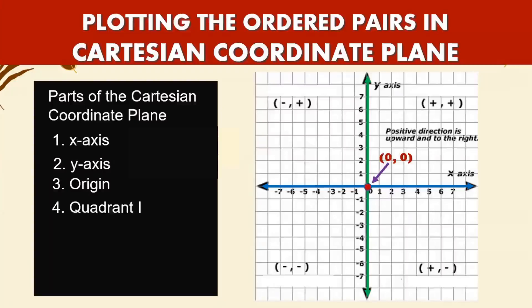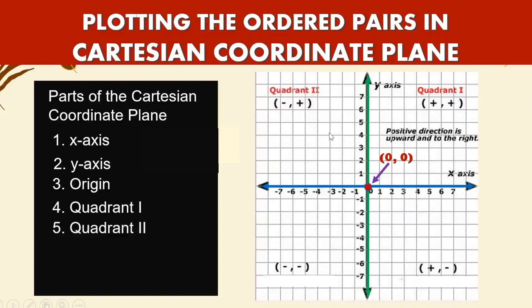Quadrant one is the part of your coordinate plane with coordinate signs positive and positive. Quadrant two has a sign where x is negative and y is positive.